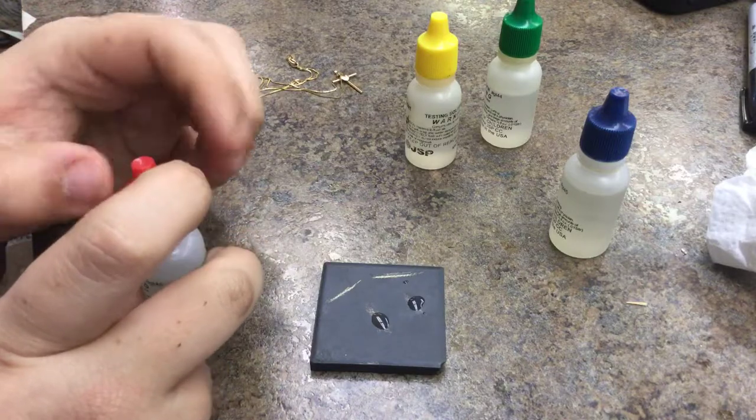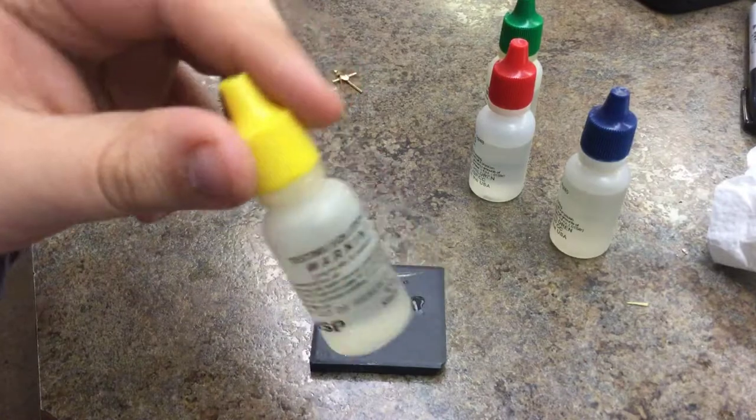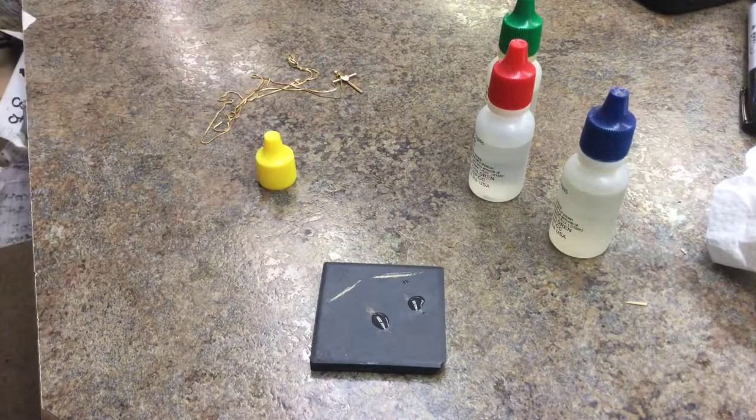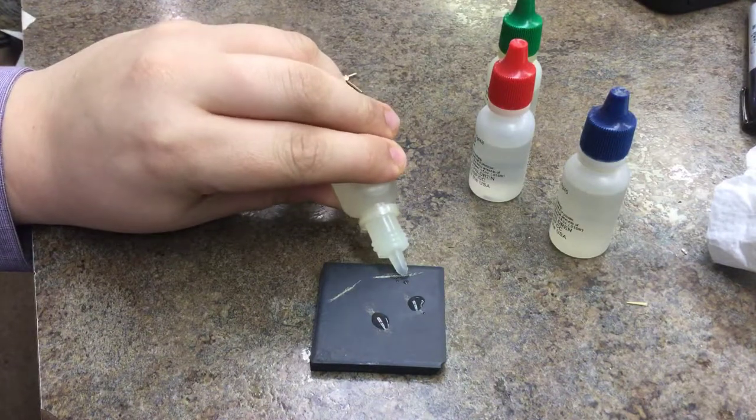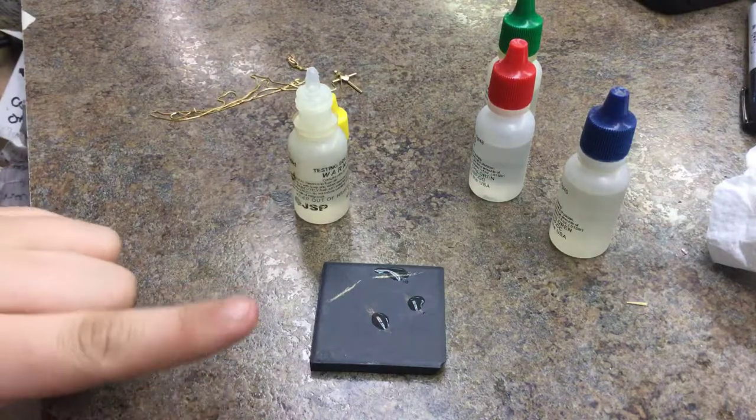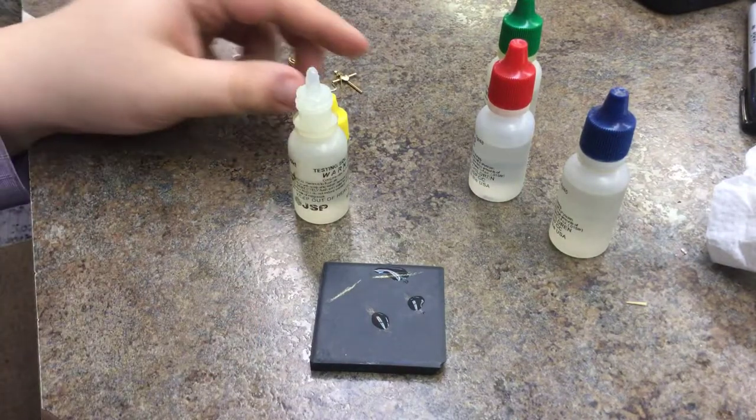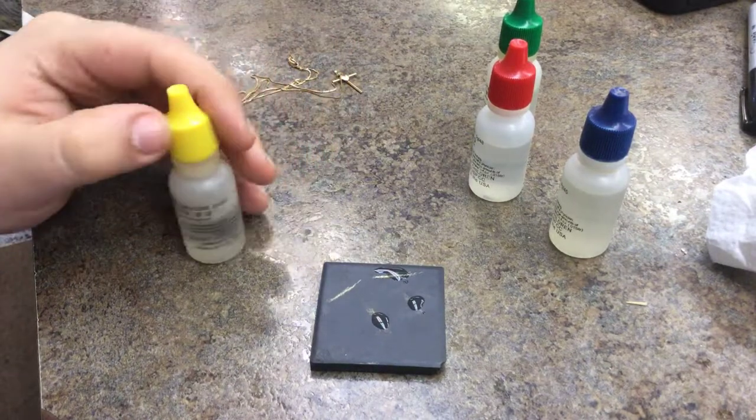But now, knowing that it's marked at 10 karat, we'll take our 10 karat gold acid solution and put a nice little drop. This is really all you need to do, just the tiniest drop, just enough to cover the line.